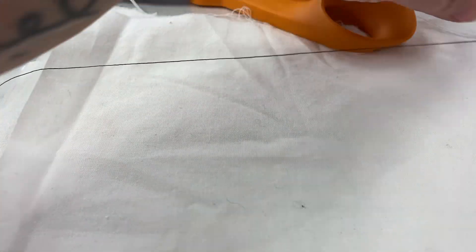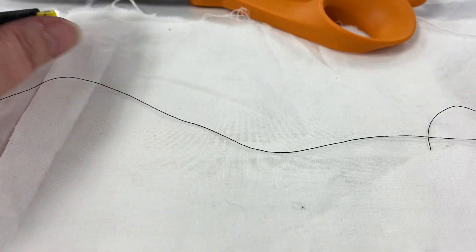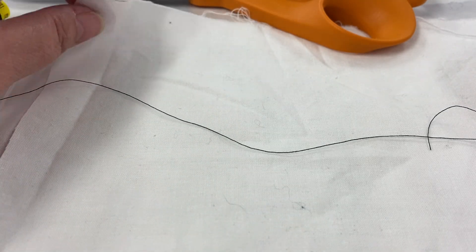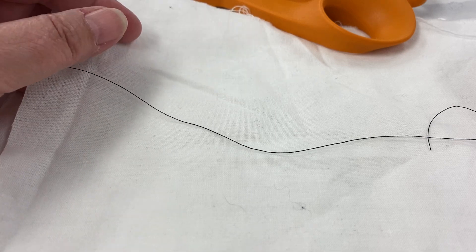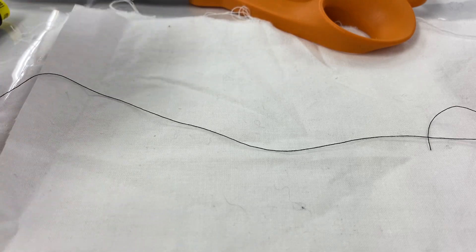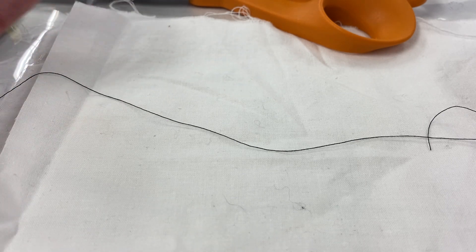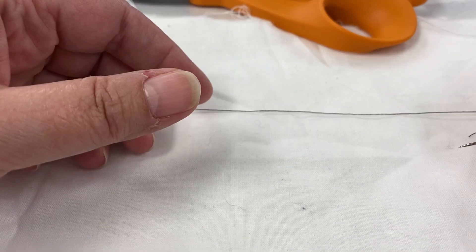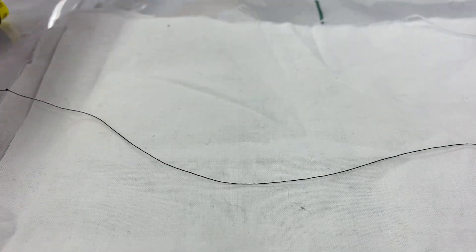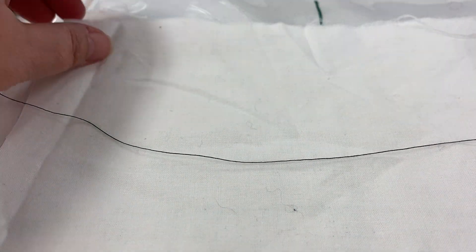You'll also notice that I have contrasting thread. For our sewing samples, you do want to use a thread that contrasts with the fabric so we can see your stitches and so that you can keep track of your stitches. If you're sewing on a real garment or on a costume, you want to get thread that matches so that it disappears. But for learning the stitches, we want something that we can see. So I just grabbed a spool of thread from here.